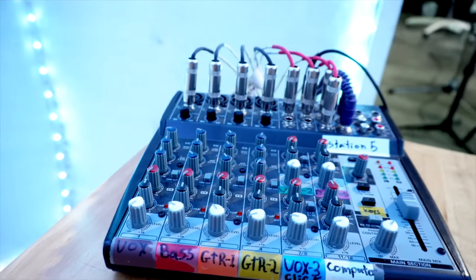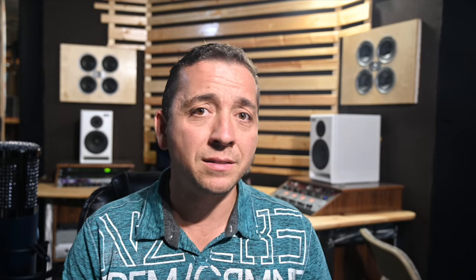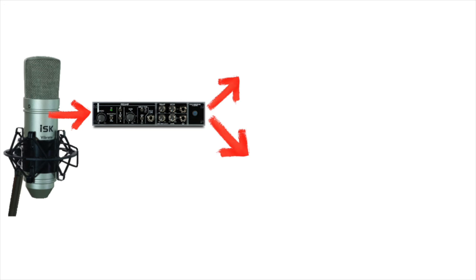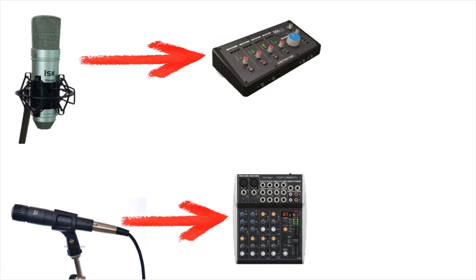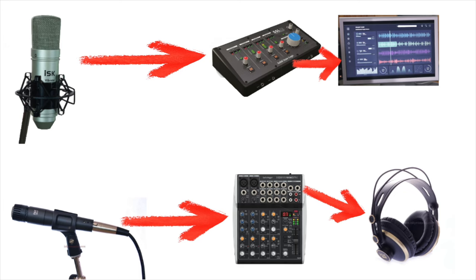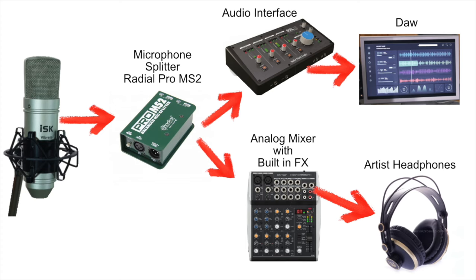This is what I have in my studio and it's easy to implement with any recording setup. Simply get a little mixer that has built-in effects such as the Behringer 1002 SFX. You'll also need to double the microphone signal — you can get an external preamp with two outputs like the Cranborne Audio Camden, or even just use two microphones. If you use two microphones, plug the better quality one into the recording interface for the signal that gets recorded, and the secondary microphone into a channel in the mixer. Route your monitoring signal from the interface into a stereo channel of the mixer. I don't recommend using a microphone splitter like the Radial Pro MS2, because it will slightly reduce sound quality.